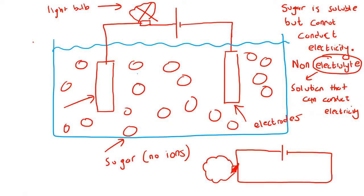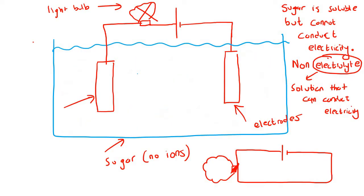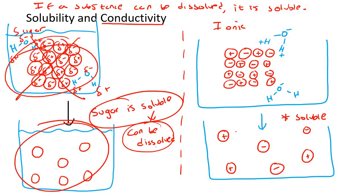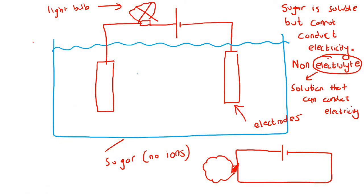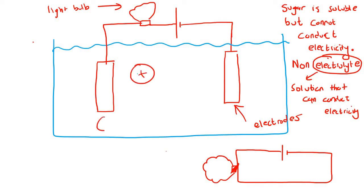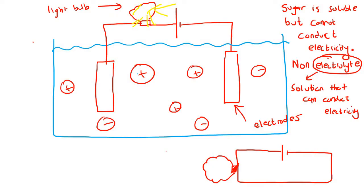An electrolyte is a solution that can conduct electricity, but sugar is a non-electrolyte. Now let us throw in the ionic substance. Remember, an ionic substance has ions - cations and anions - so it's got a whole bunch of positives and negatives. When we put them in, suddenly the light bulb is able to shine very bright. There's something interesting I want to explain to you guys.